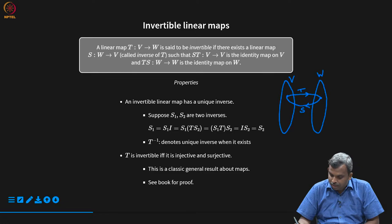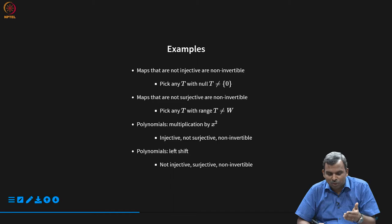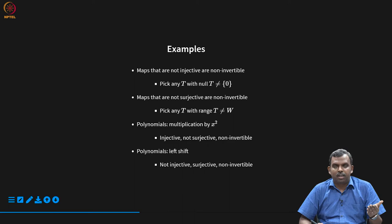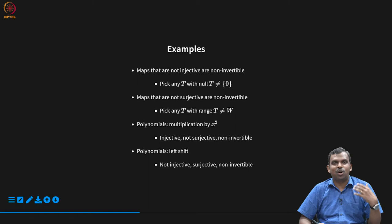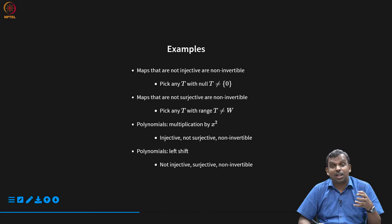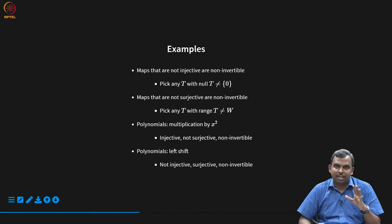Basic properties of invertible linear maps are established. For non-invertible examples: any transform whose null space is not exactly {0} will automatically not be invertible, since it fails injectivity. Same if a map is not surjective — if the range does not occupy the entire vector space, it is not invertible. These are easy conditions to check. Non-invertible examples are easy to come up with; at least one standard example of an invertible map is the identity map from V to V.